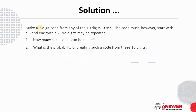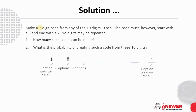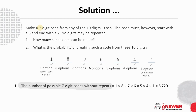Let's place our seven slots. We start by considering the slots where conditions have been stipulated. The code must start with three, so there is only one option for the first slot, and it must end with two, so there is only one option for the last slot. Because digits cannot be repeated, we have eight of the ten options left for the second slot, then seven for the third, then six, then five, then four. The number of possible seven-digit codes without repeats is one times eight times seven times six times five times four times one, which comes to 6720.